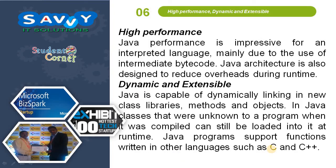High performance: Java's performance is impressive for an interpreted language, mainly due to the use of intermediate bytecode. Java's architecture is also designed to reduce overheads during runtime. Dynamic and extensible: Java is capable of dynamically linking in new class libraries, methods, and objects. Classes that were unknown to a program when it was compiled can still be loaded into it at runtime. Java programs also support functions written in other languages such as C and C++.